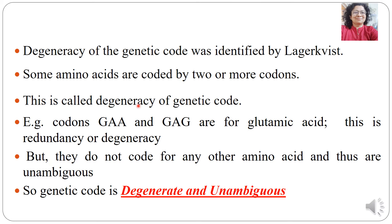Now, the other point about this is that GAA and GAG code only for glutamic acid — they do not code for any other amino acid, and thus they are unambiguous. That is, there is no confusion that they would code for any other amino acid. So although one amino acid has more than one codon, those codons are not shared by any other amino acid. That is why it is said that the genetic code is degenerate and unambiguous.